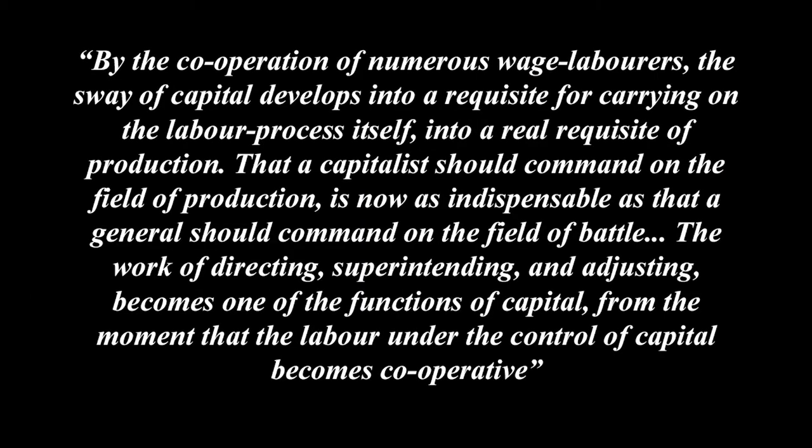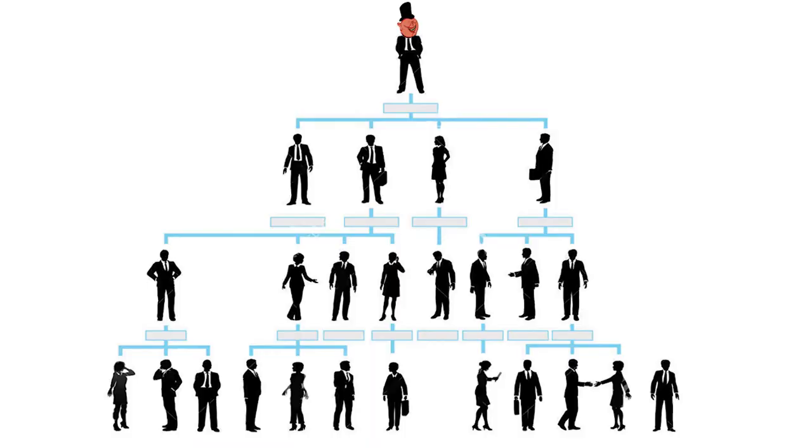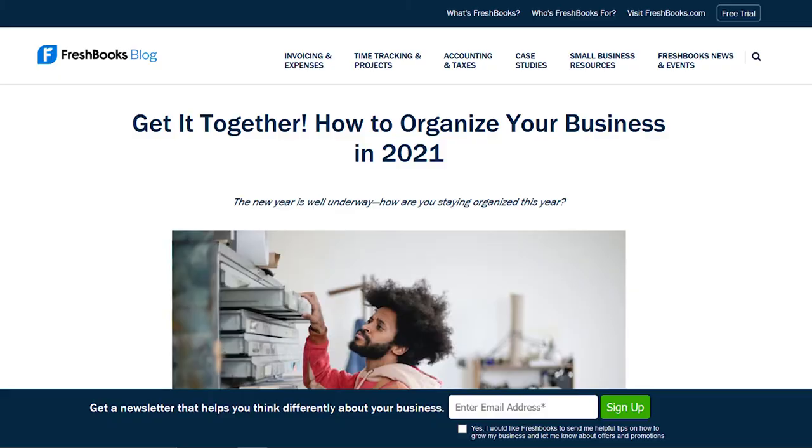By the cooperation of numerous wage labourers, the sway of capital develops into a requisite for carrying on the labour process itself — into a real requisite of production. That a capitalist should command on the field of production is now as indispensable as that a general should command on the field of battle. The work of directing, superintending and adjusting becomes one of the functions of capital, from the moment that the labourer under the control of capital becomes cooperative. During the period that the labourer is working for the capitalist, their labour is owned by the capitalist. And because cooperation of labour under capitalism is used as an outside force towards the capitalist's plan or goal, authority over production forms a top-down structure, removing any sense of democratic decision-making over labour.